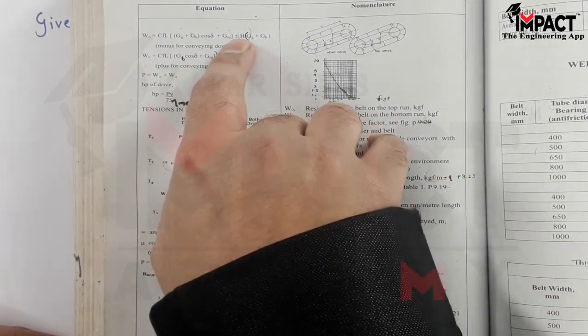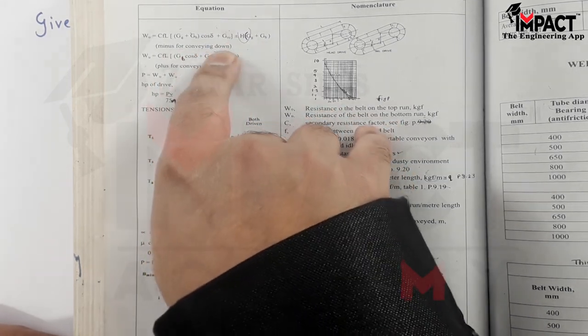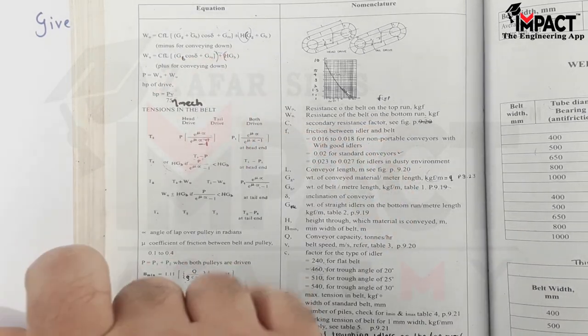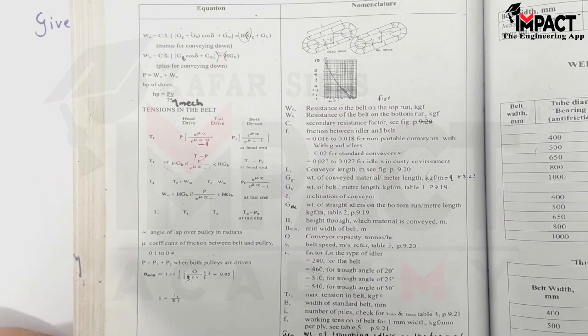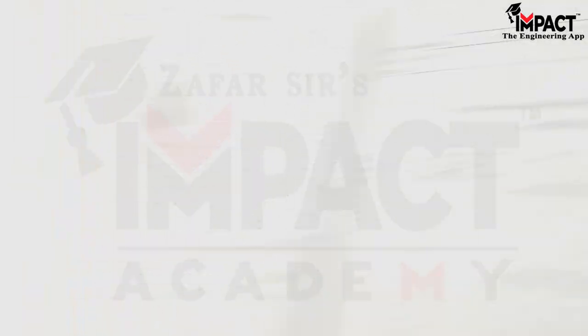Now here we have to take there are plus and minus sign. So we have to take minus sign if the material is conveying down. Now we have to read the question and see if it is conveying up or down. If nothing is mentioned, always we have to take it as conveying up, so there will be positive sign. So now let's check the question.